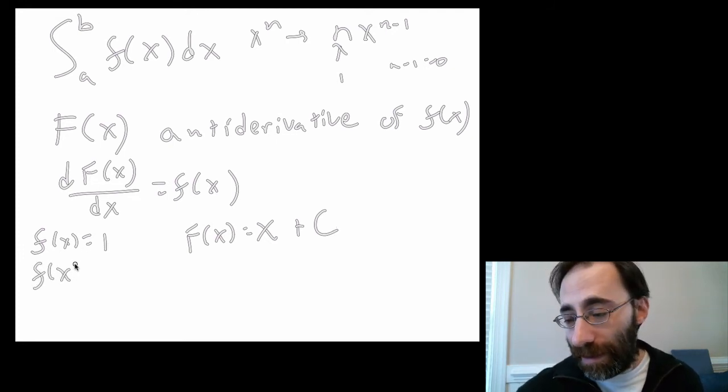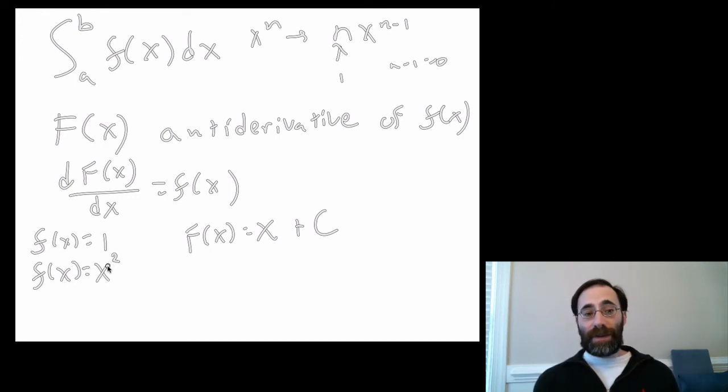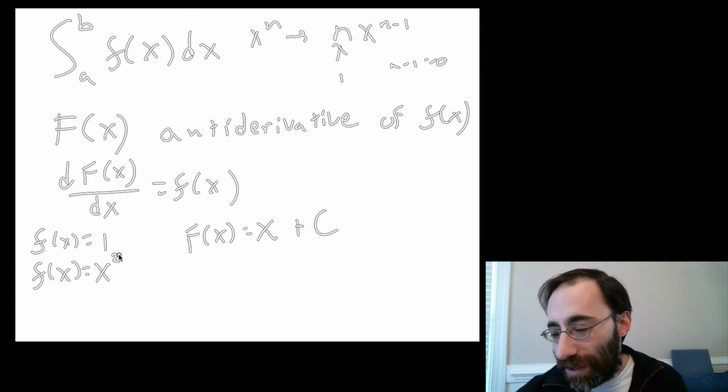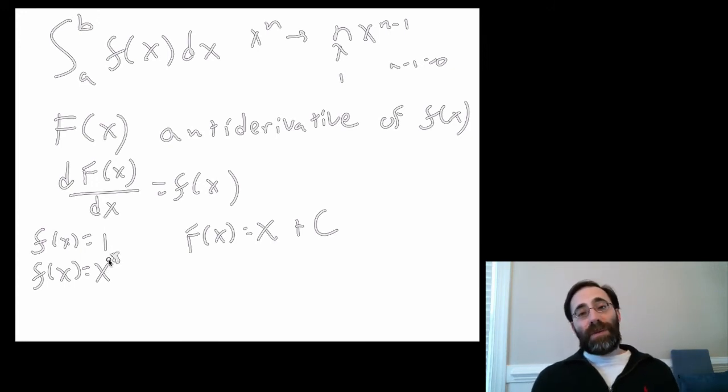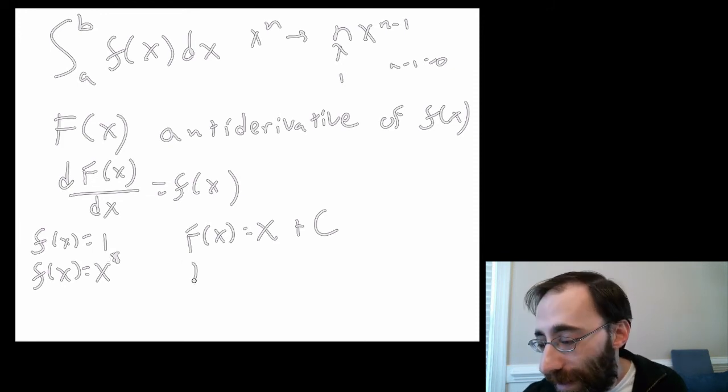Now we can try it again. What about x squared? What produces x when you differentiate? Well, we know from the power rule, x squared becomes x. But you pull down a 2, so if you divide by 2 ahead of time, that cancels.